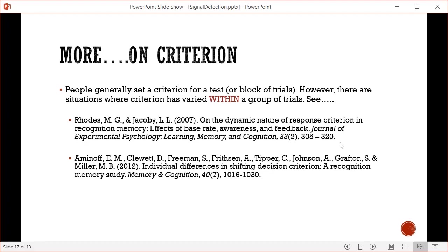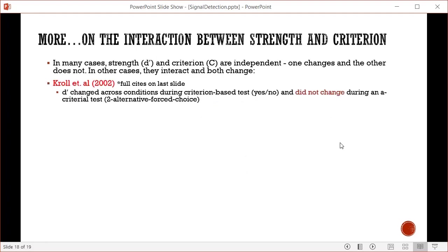A couple notes about criterion. People generally set a criterion for a test or block of trials, but there are situations where criterion varies within a group of trials. See Rhodes and Jacoby or Aminoff and colleagues for examples. Also, often we keep strength the same and vary criterion - there's a lot of evidence that they can be independent.